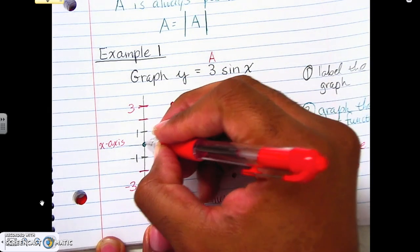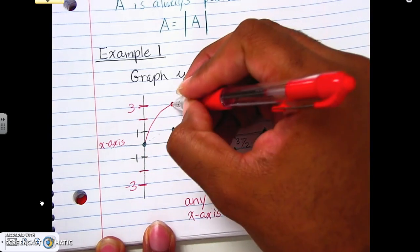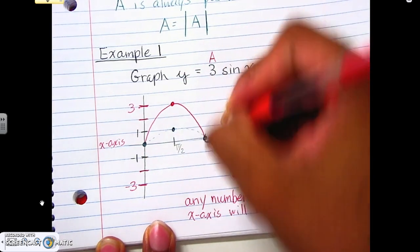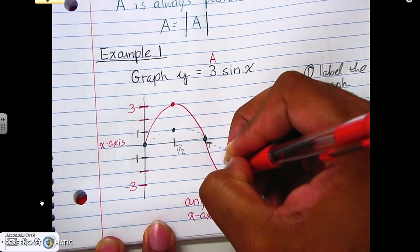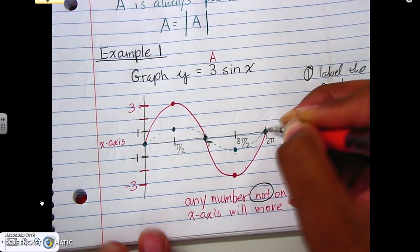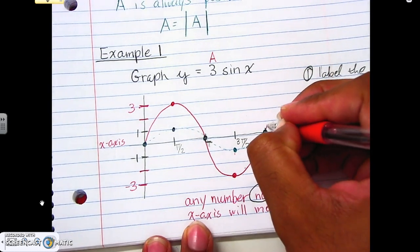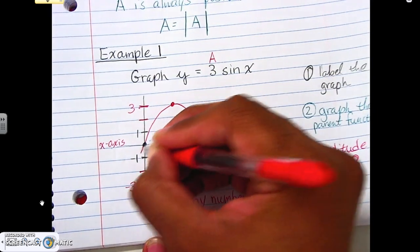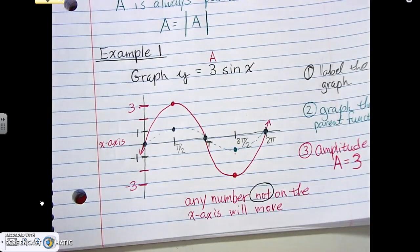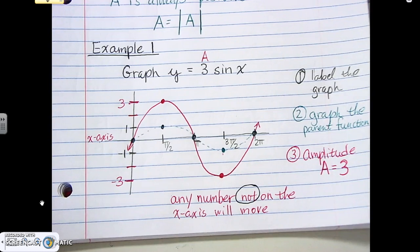Our final graph is drawn as a solid line — make sure it's curvy, not pointed. Continue with arrows in both directions because the graph never stops; it continues on forever. That's all you have to do: label the graph, graph the parent function as a dotted line, then apply the amplitude to get your solid final graph.